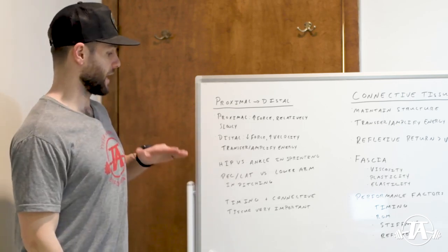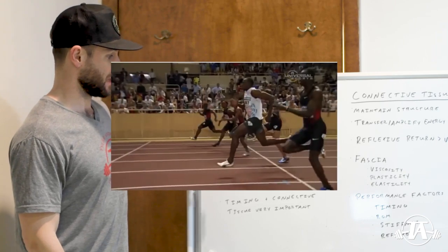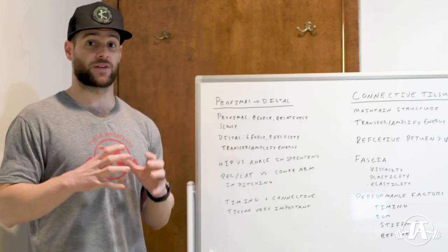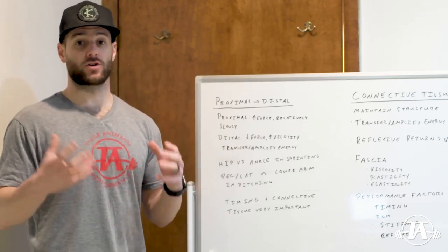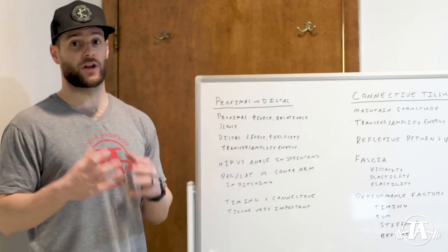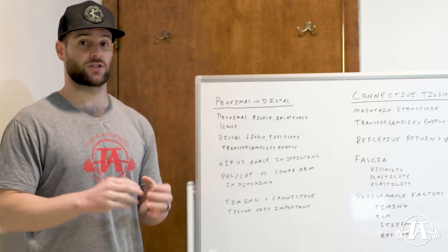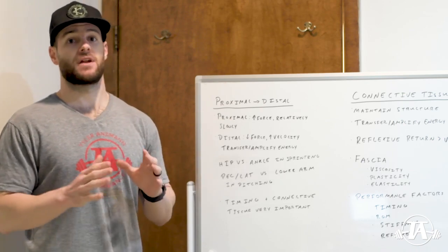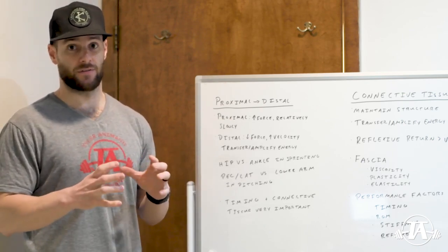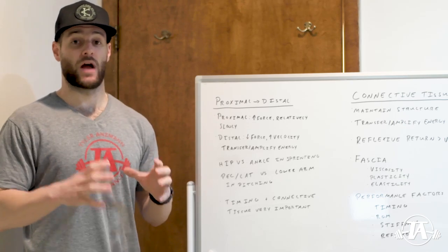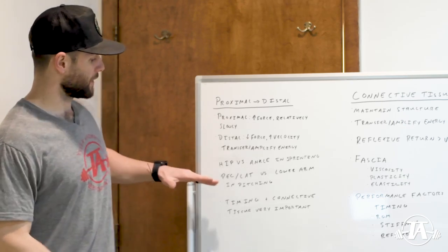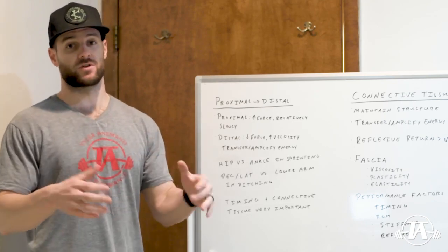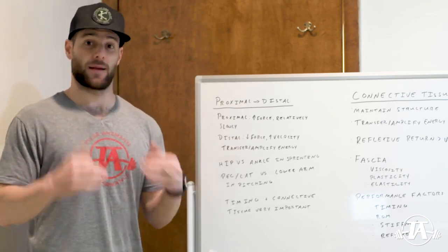We can see this when we look at sprinters: the muscles around the hip are in charge of producing large forces but don't do it very quickly. The ankle complex is in charge of transferring that to the ground at very high velocity, but produces far less force than the musculature around the hip. We see the same thing in throwing — the pec and the lat are your big force producers, and the more distal portions of the arm transfer and amplify that energy.